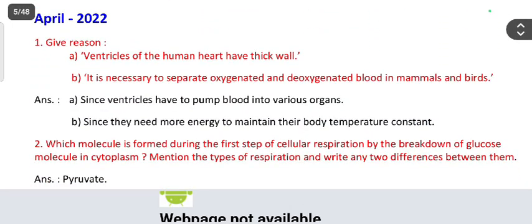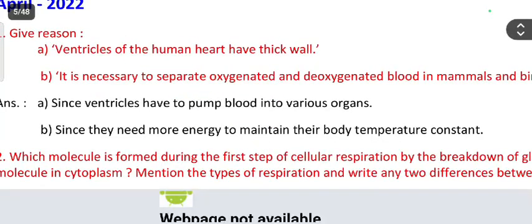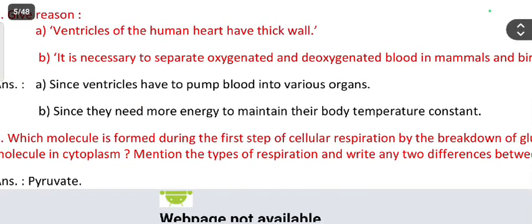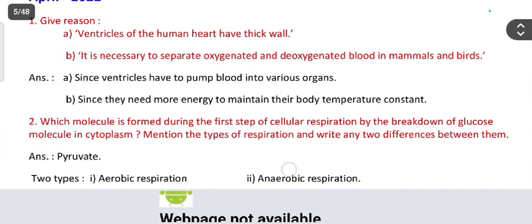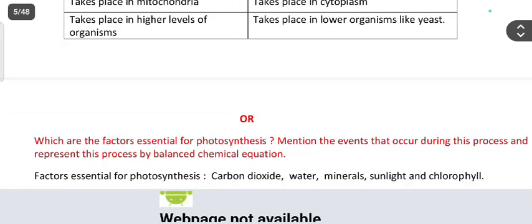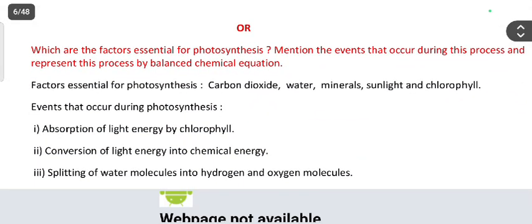From April 2022: give reason — ventricles of the human heart have thick walls. Since ventricles pump blood into various organs, it is necessary to separate oxygenated and deoxygenated blood in mammals and birds since they need more energy to maintain their body temperature constant. Next, mention the types of respiration — which molecule is formed during the first step of cellular respiration by the breakdown of glucose in the cytoplasm? The answer is pyruvate. Aerobic respiration and anaerobic respiration — copy down the differences.